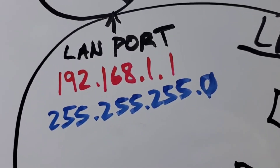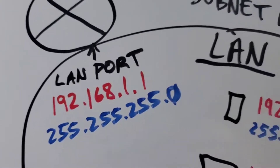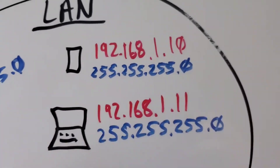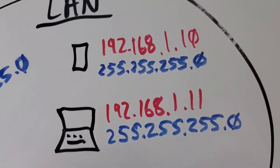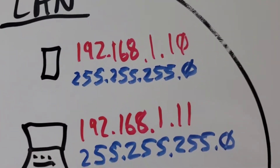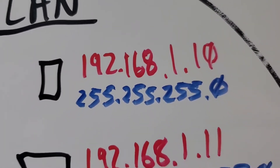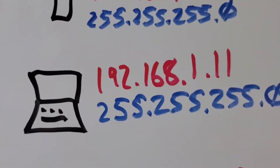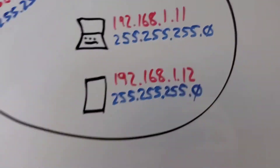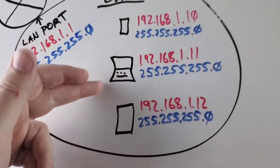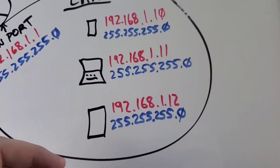It's customary to make your first IP the router IP, and the rest can be anything between 1 and 254. I didn't start at 2 — I just decided to start at 10. So the first device is .10, the second device is .11, the third device is .12 and so on. As you add more devices to your network, it would be the same thing — you just continue on down the line.